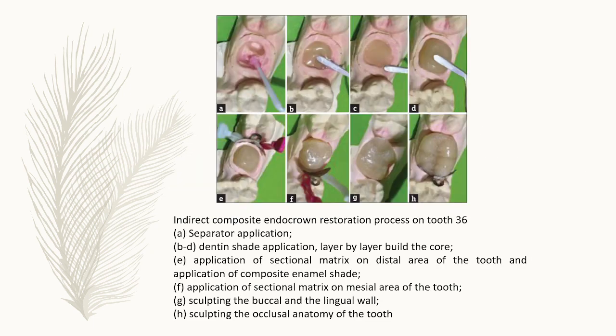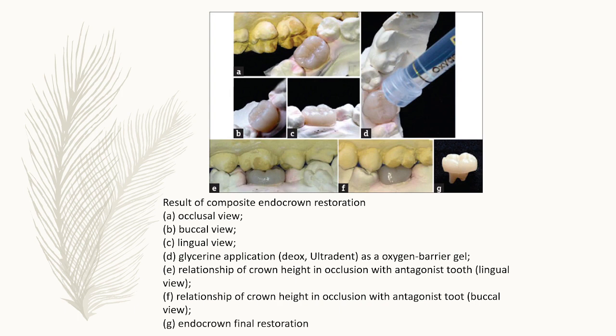This is how the composite endocrown was fabricated. A separator was applied to all surfaces of tooth 36 and the proximal surfaces of teeth 37 and 35. SDR and dentin shade composite were applied in the pulp chamber up to the preparation margin and light cured to create the base. The build-up was done layer by layer with dentin shade, then sectional matrices were used for proximal areas, enamel shade was applied, and the buccal, lingual walls and occlusal anatomy were carved. The results show the composite endocrown restoration in occlusal, buccal, and lingual views.